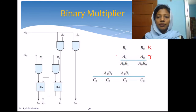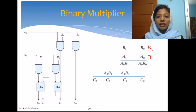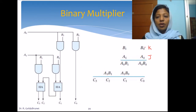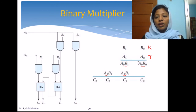Let us generalize the multiplication. Assume that we have j bits in the multiplier and k bits in the multiplicand. How many AND gates will we require to perform multiplication between two numbers where one is j bits long and the other is k bits long? The number of AND gates will be equal to j×k, because every bit in the multiplicand has to be multiplied by every bit in the multiplier. We will have jk AND gates, each for generating each bit in the partial product. For each bit in the multiplier we will get one partial product, so there will be j partial products.